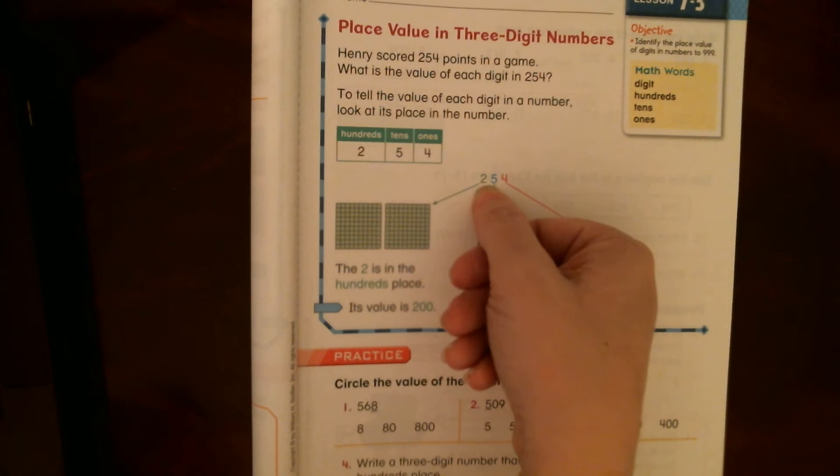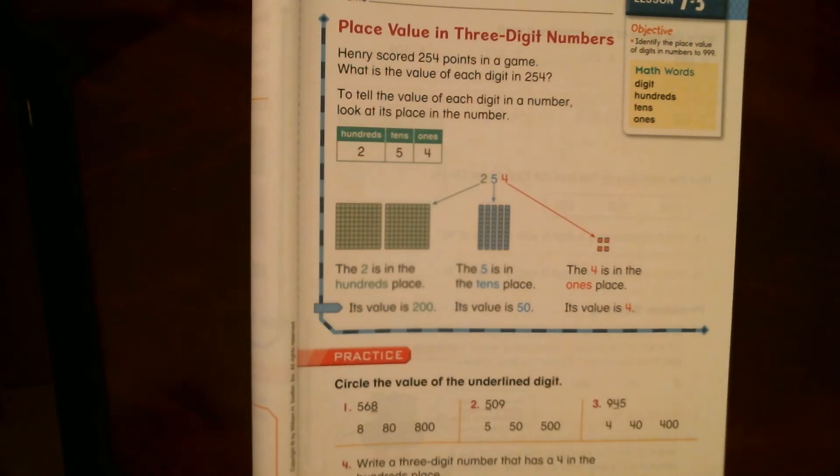Okay, so this isn't a two. That two represents 200. That five represents 50. And then the four represents four.